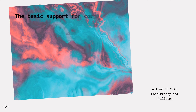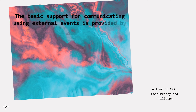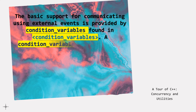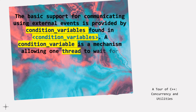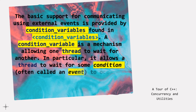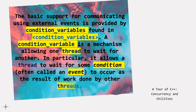The basic support for communicating using external events is provided by condition variables, found in <condition_variable>. A condition variable is a mechanism allowing one thread to wait for another. In particular, it allows a thread to wait for some condition — often called an event — to occur as the result of work done by other threads.